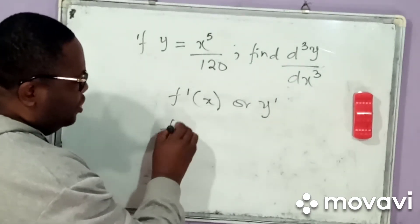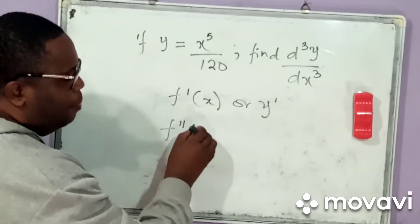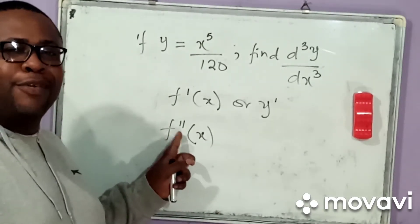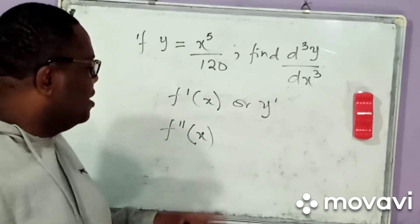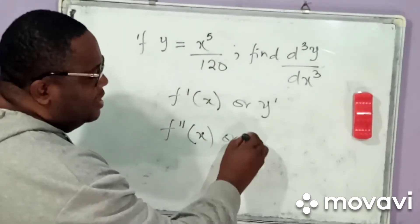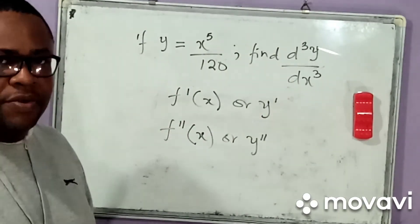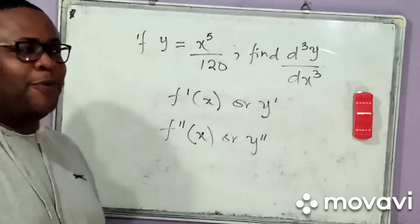Now, if they wanted to differentiate twice, they will say f double prime. You see something here? This simply means f double prime of x. Or, they can simply say y prime prime. And it continues like that, and so on and so forth.